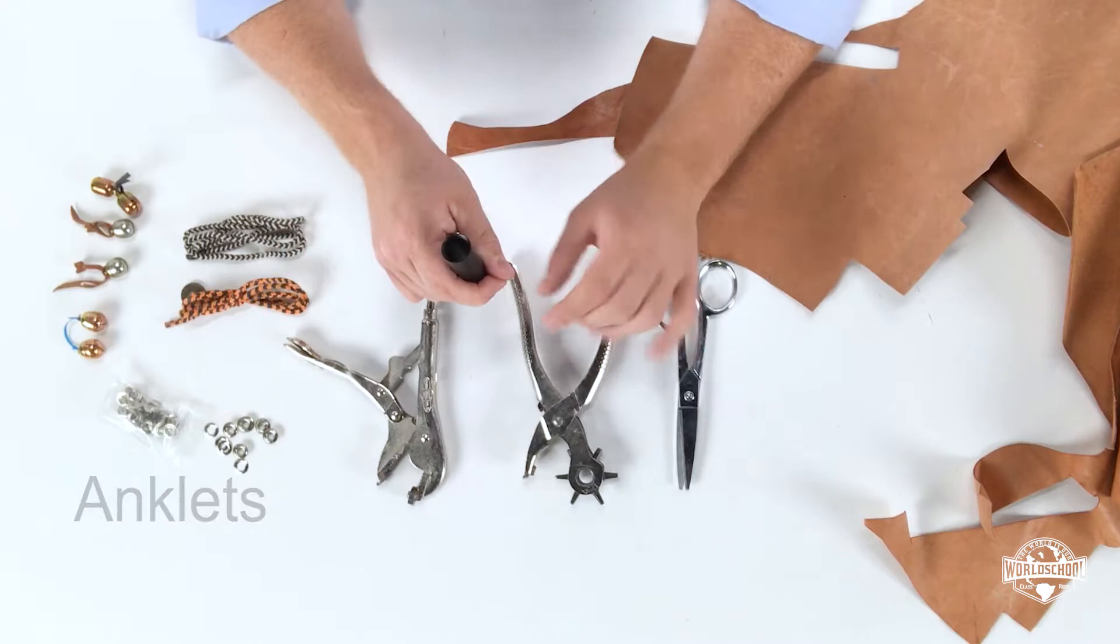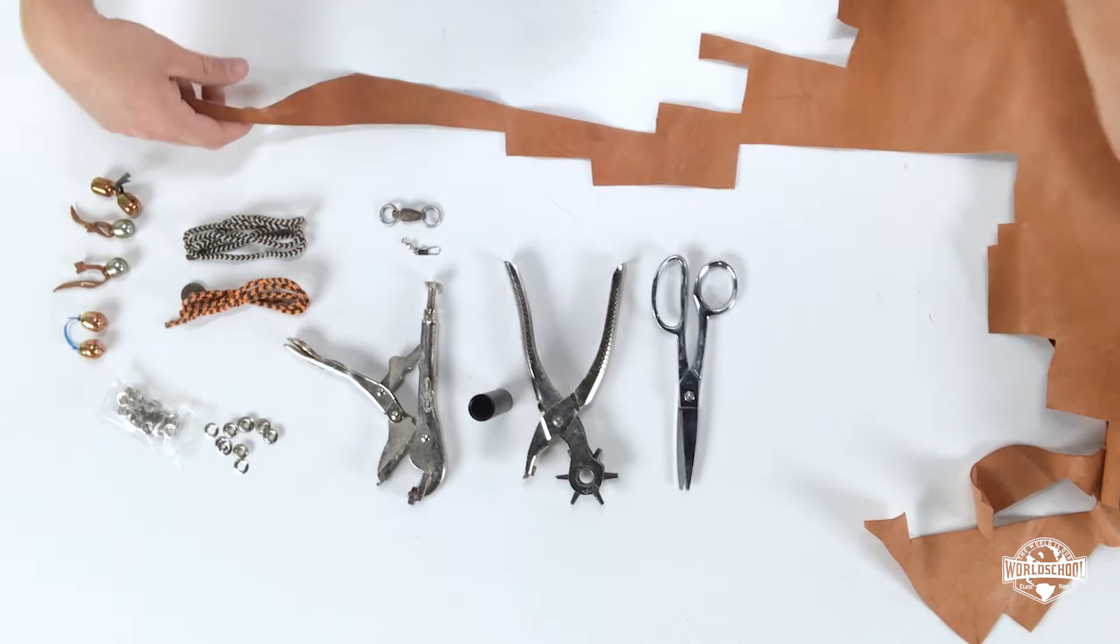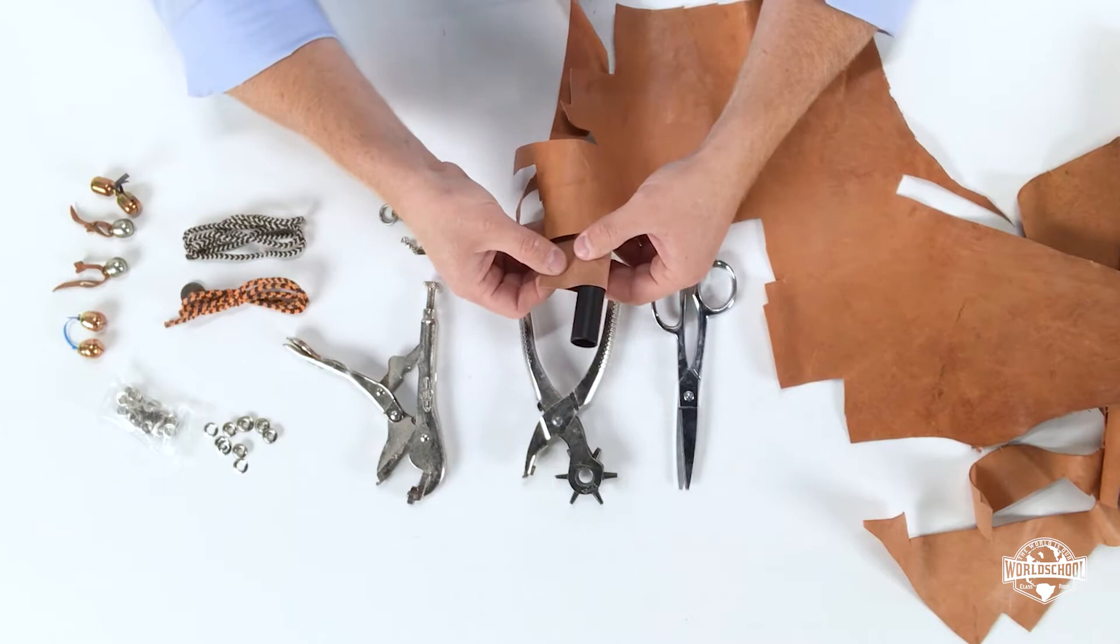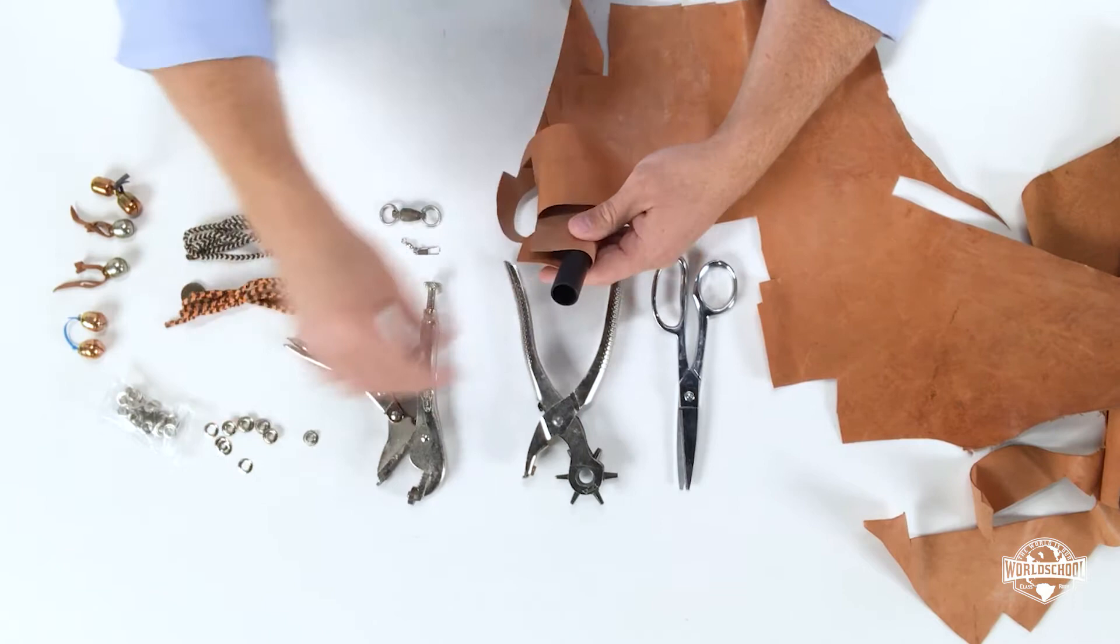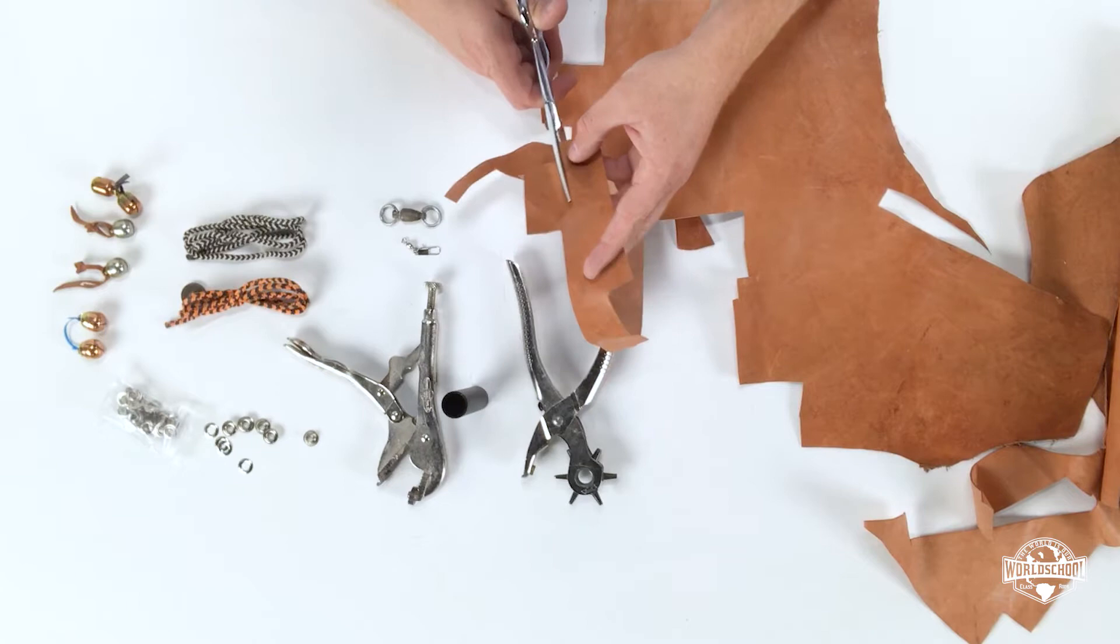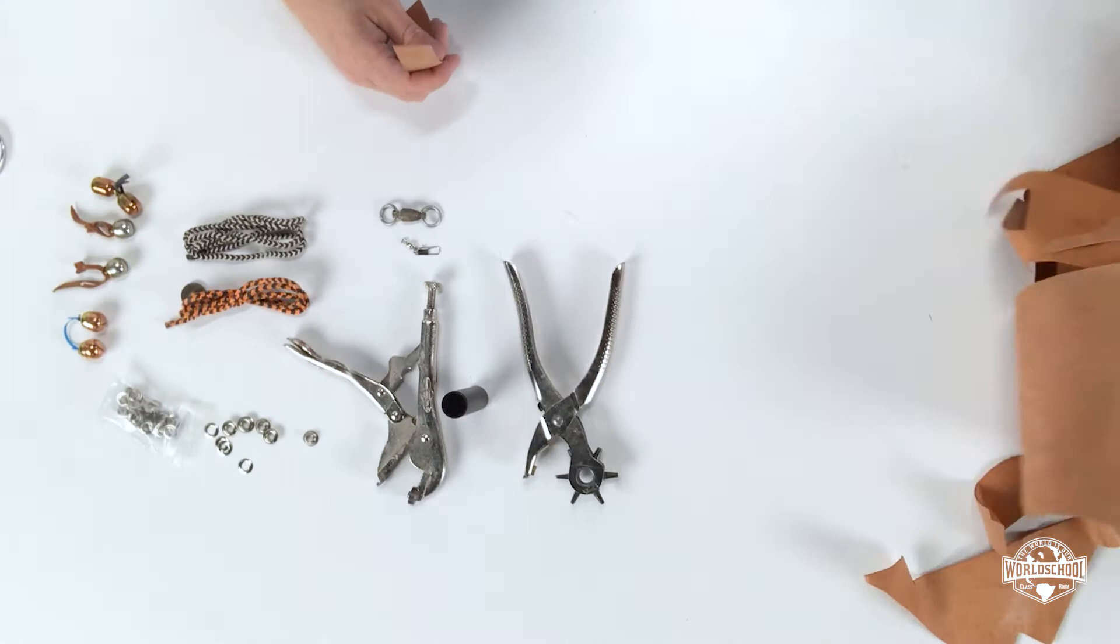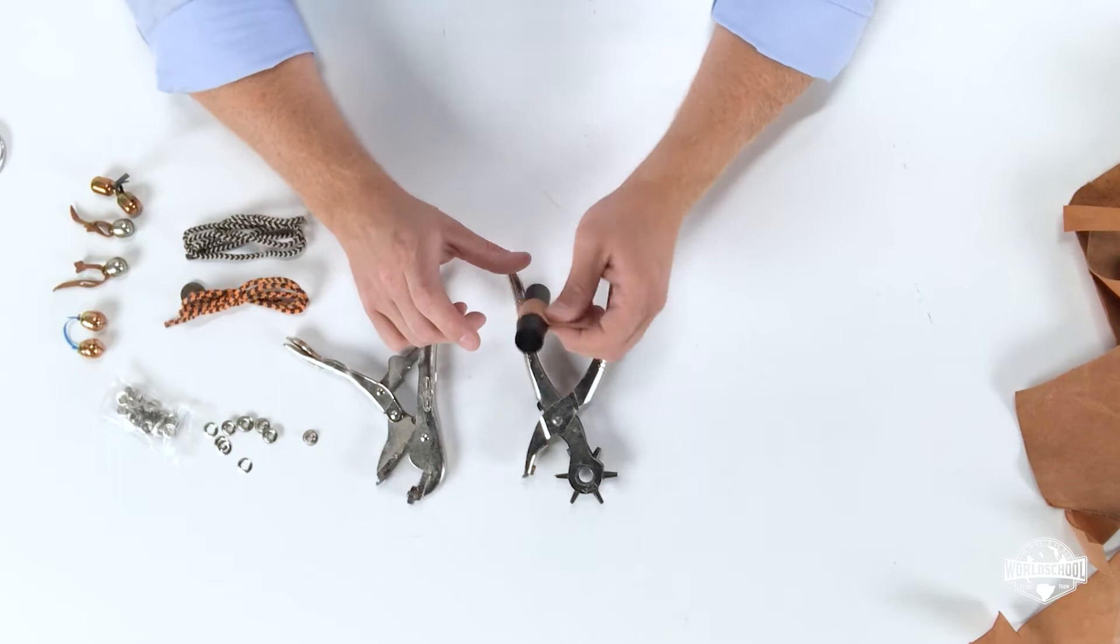So kangaroo leather is what we're going to use to make first anklets. So again, pretend this is a leg. We're going to put an anklet around and then have what's called a Jesses go through. So looking at the leg here, we have to do a rough measurement of how big around this is going to go. Because we're going to have a grommet that's going to go through.